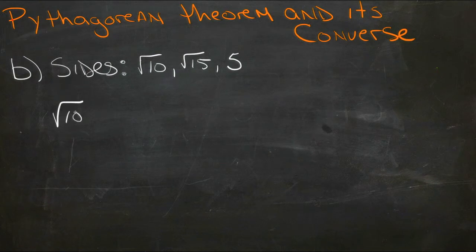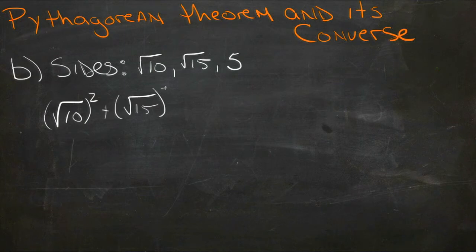So we should have √10 squared plus √15 squared equals 5 squared.